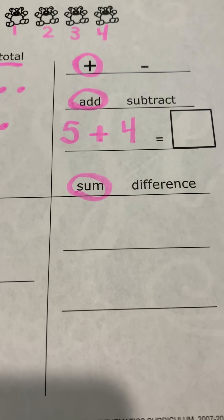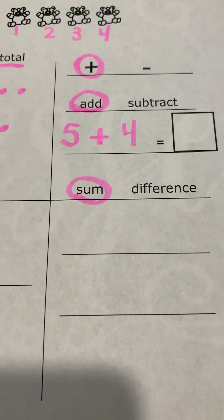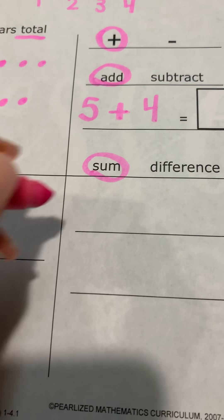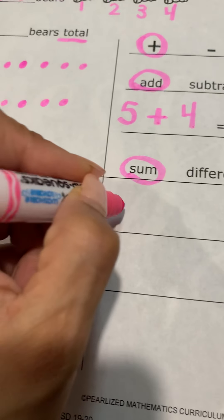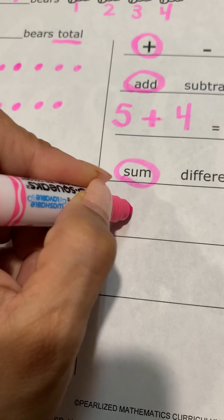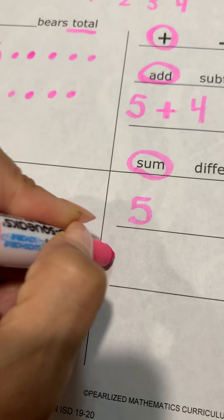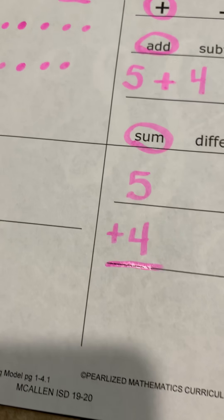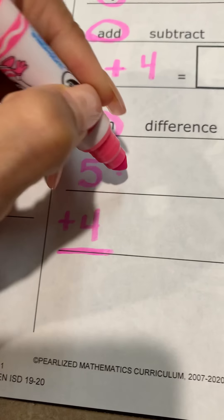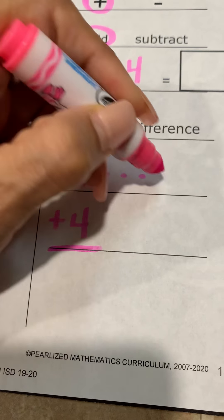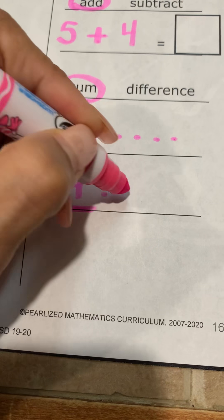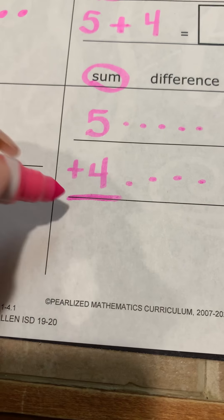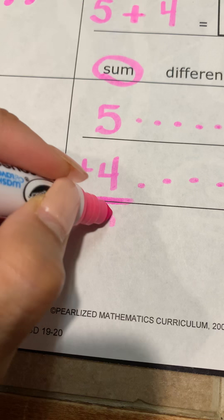Now we're going to solve and justify. We write our equation: five plus four equals. We draw our dots — five dots, then four dots. How many do we have all together? Nine.